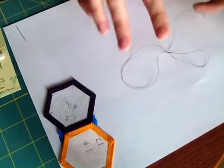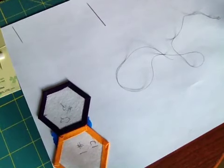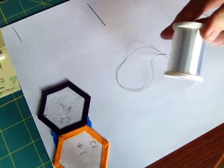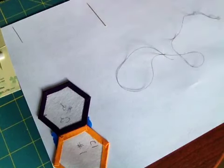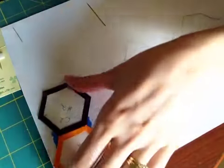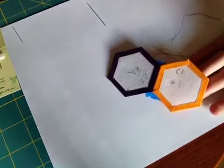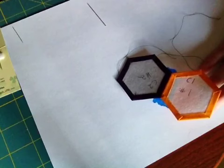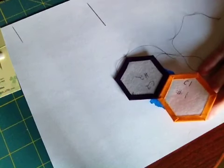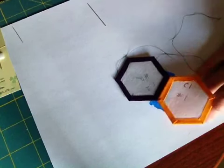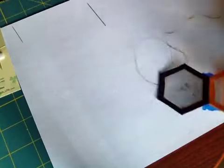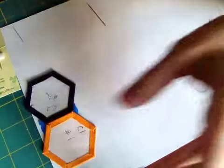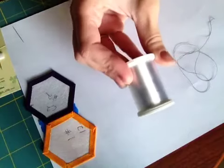I'm also using black thread so you can see it more clearly on the camera, but when I stitched my hexagons together I actually used clear monofilament thread because I was using such contrasting colors. For example, here I'm using a light orange with a dark purple, and choosing a thread that's going to match both of those is kind of hard to do. A beige or light gray might be a good option in that case, but I just wanted to avoid that and not have to worry about switching threads, so I used the clear monofilament.